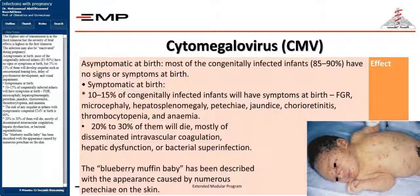Most congenitally infected infants — 85–90% — have no signs or symptoms at birth, but 5–15% will develop sequelae such as sensorineural hearing loss, delay of psychomotor development, and visual impairment. Symptomatic infants — 10–15% — will have FGR, microcephaly, hepatosplenomegaly, petechiae, jaundice, chorioretinitis, thrombocytopenia, and anemia. The risk of any sequelae in symptomatic congenital CMV at birth is 90%. About 20–30% of symptomatic infants will die, mostly from disseminated intravascular coagulation, hepatic dysfunction, or bacterial superinfection. The 'blueberry muffin baby' appearance has been described, caused by numerous petechiae on the skin.